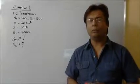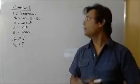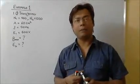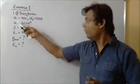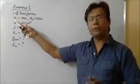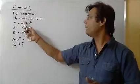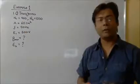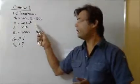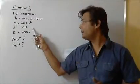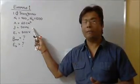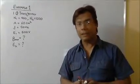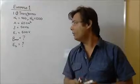We will see an example now on transformers. This is example number 1 where a single phase transformer is given to you where the turns ratio N1 is 400 and N2 is 1000. The area of the cross section of the core is 60 cm² and it is connected to a frequency of 50 Hz, where the primary voltage is given as 500 volts.